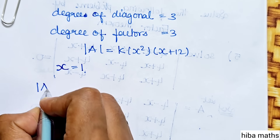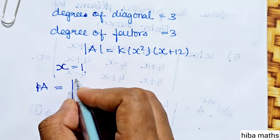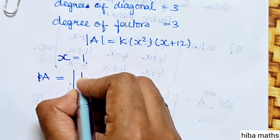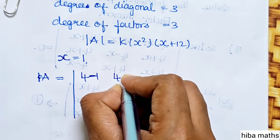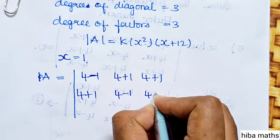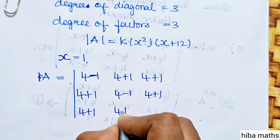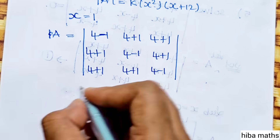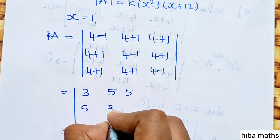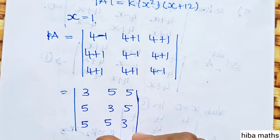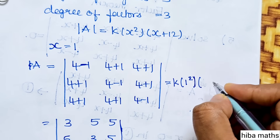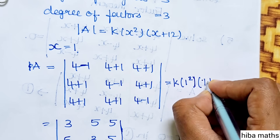If we have a value like this: 4 minus x, then 4 plus x, then 4 plus x. For the question, entries are 4 minus 1, 4 plus 1, 4 plus 1, and the diagonals are 4 plus 1, 4 minus 1. Changing the next line gives 4 minus 1 equals 3, and 5, 5. So the entries are 5, 3, 5, 5, 5, 3. Then k into x value 1 squared into x value 1 plus 12.